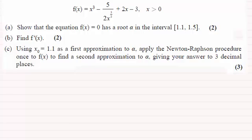Okay, welcome back then if you had a go. So in the first part we've got to show that there's a root alpha for this equation f of x equals naught in this interval 1.1 to 1.5.